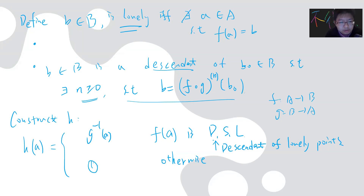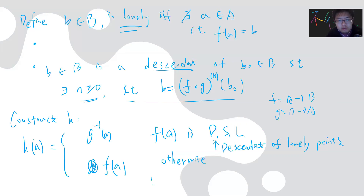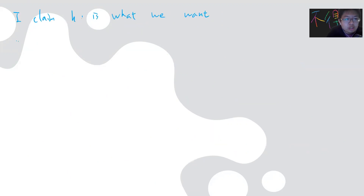I claim that h is what we want — a bijection from A to B. First, we need to check that h is well-defined. This part is simple.